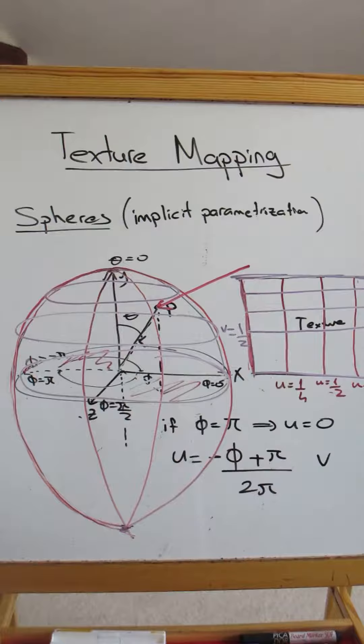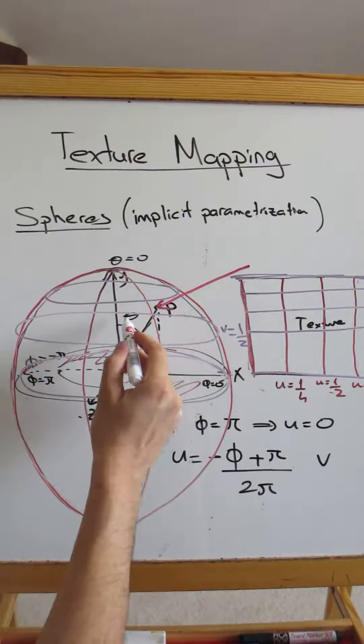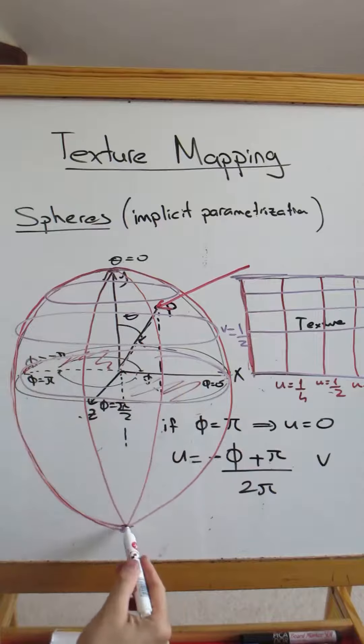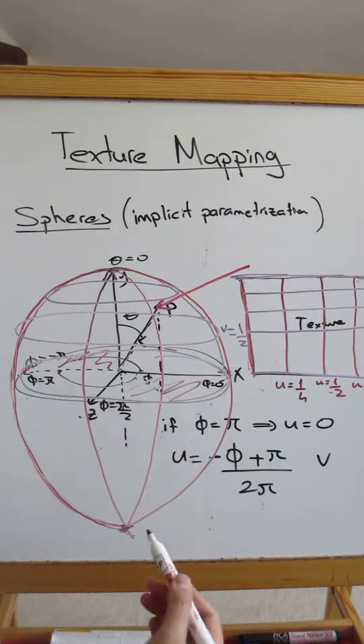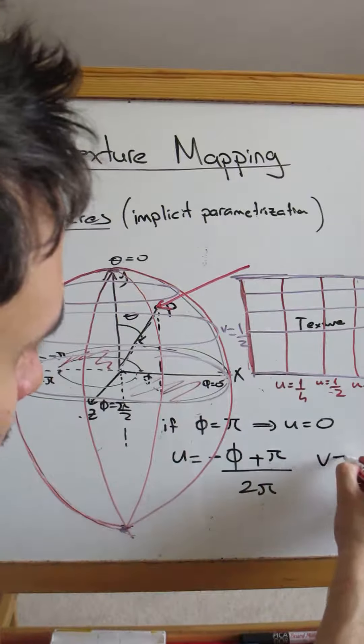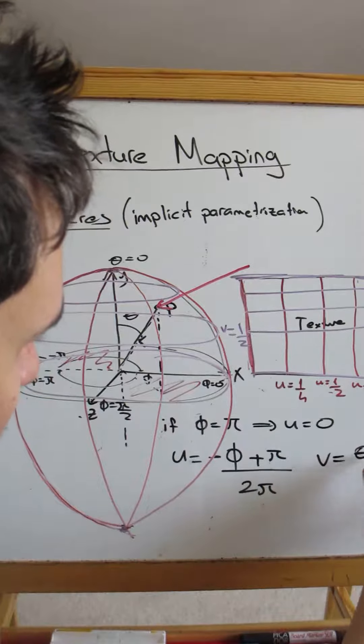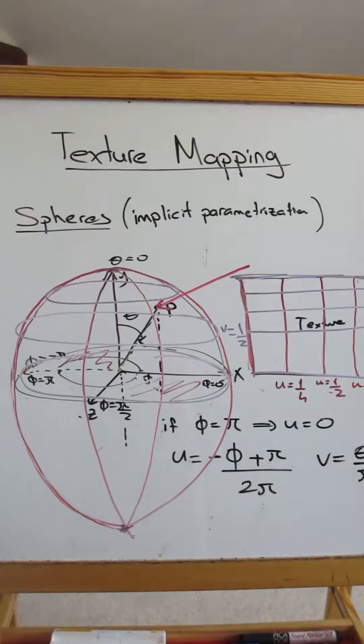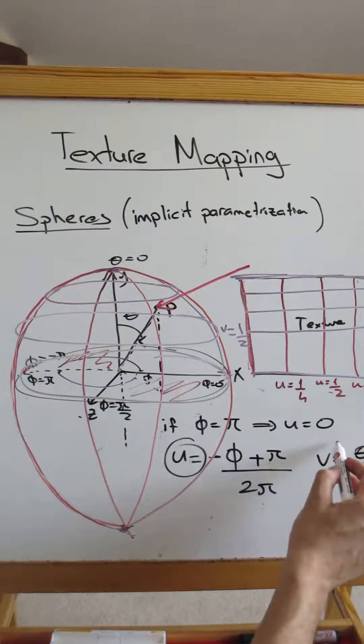This is easier. Our range for theta goes from 0 to pi here, so all we need to do is to compute the V coordinate. We divide theta by pi. So once you compute the U and V values